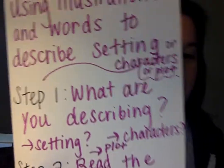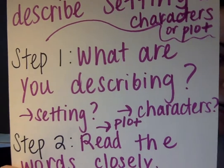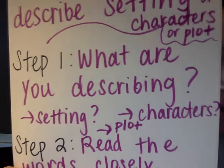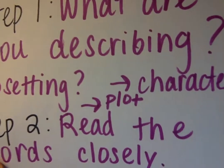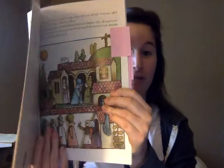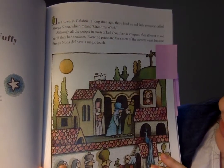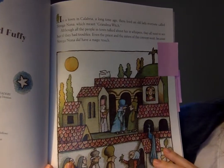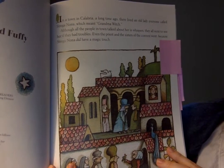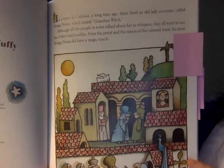Look at step one. Step one is: what are you describing — setting, characters, or plot? Of course, we know we're focusing on the plot. On to step two: read the words closely. Let's take a look at page one and I will read the words closely for you. In a town in Calabria, a long time ago, there lived a little old lady everyone called Strega Nona, which meant grandma witch.